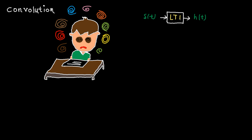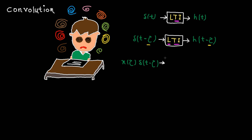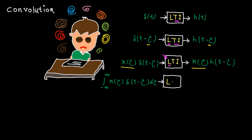Now, let's assume the system is LTI. As the system is time-invariant, by shifting the input by an arbitrary value — let's say τ — the output gets shifted by the same value. In fact, a τ-unit shift in the input results in a τ-unit shift in the output. Now, the system is linear. So if we multiply the input by an arbitrary value — let's say x(τ) — the output is multiplied by the same value. Multiplying the input by x(τ) results in the same multiplication at the output. The system is linear, so a linear combination of inputs results in a linear combination of outputs. Please note the integral basically means summation or linear combination.